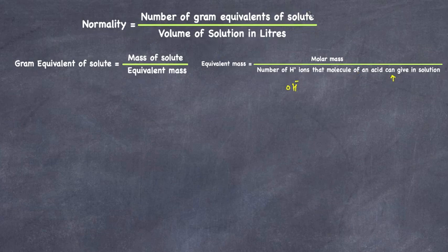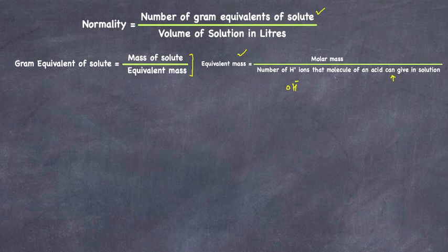To summarize: normality is the number of gram equivalents of solute divided by volume of solution in liters. The gram equivalent of solute equals mass of solute divided by equivalent mass, where equivalent mass is molar mass divided by the number of hydrogen ions a molecule of an acid can give in solution, in the case of acids.